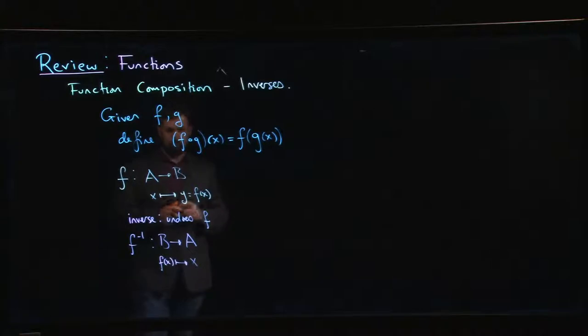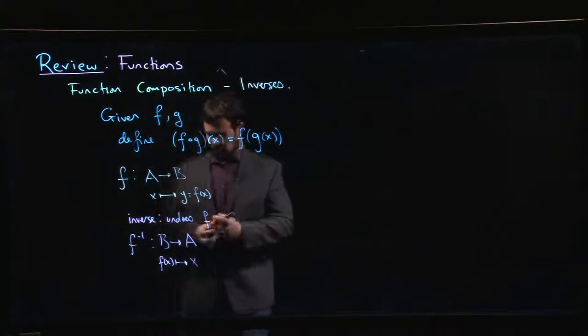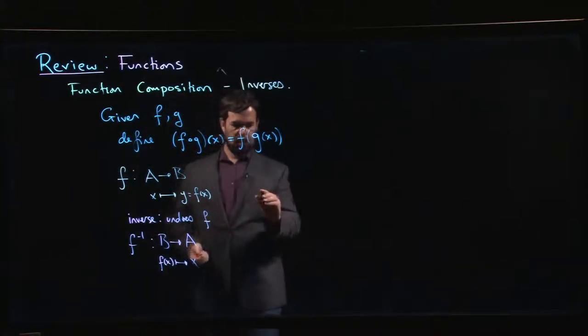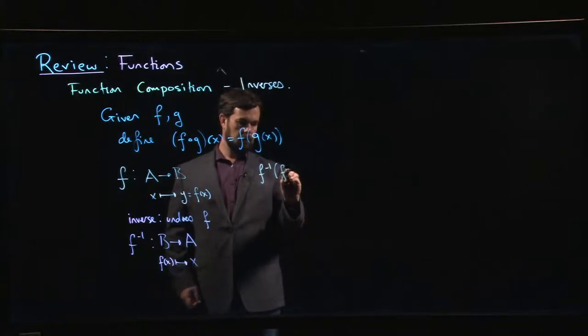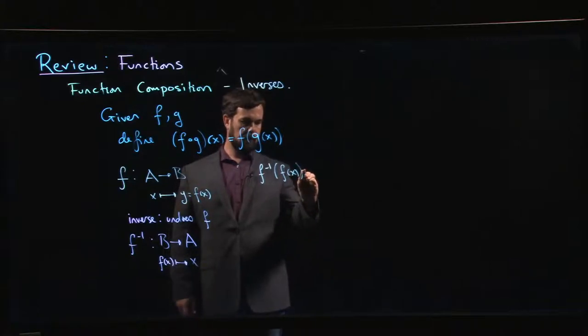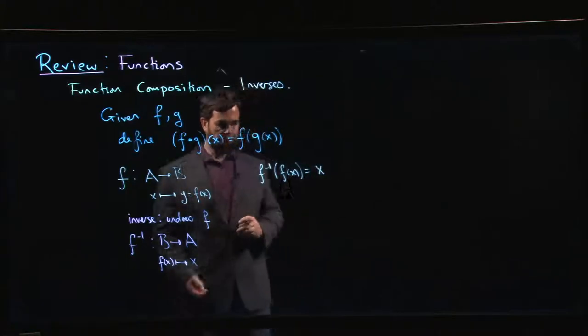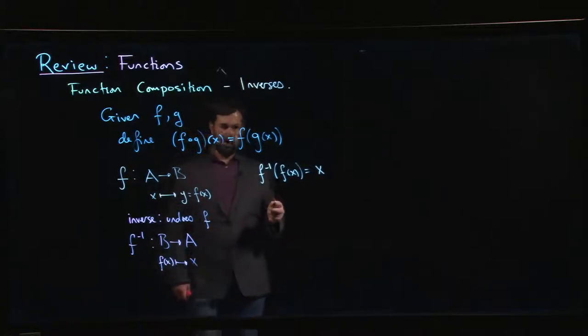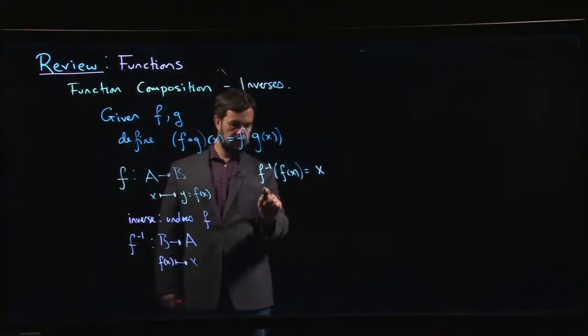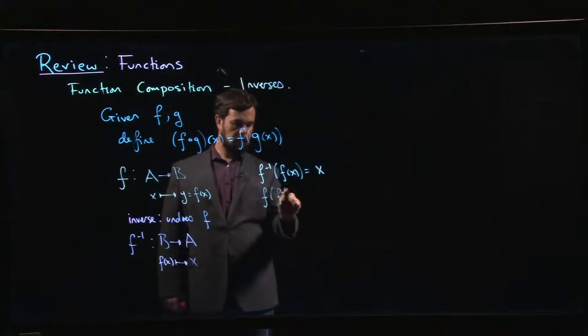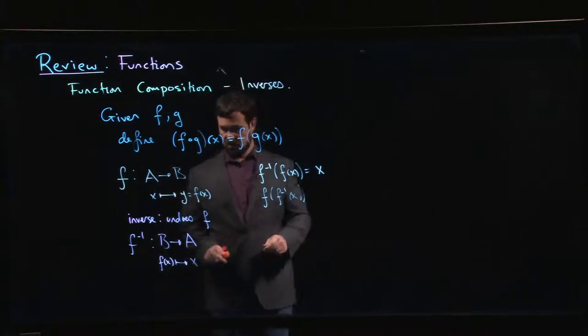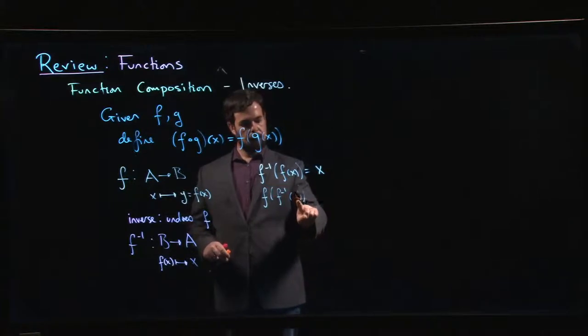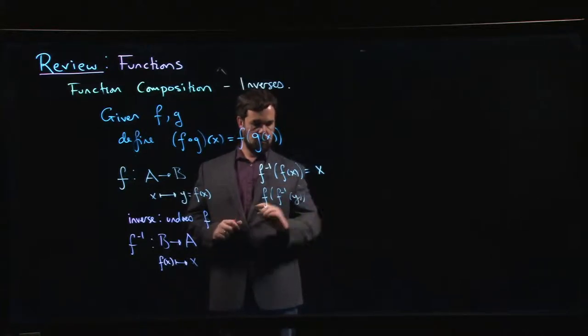Simple enough. So what that amounts to saying is that if I do f inverse of f of x, I should get x. And similarly, if I did f of f inverse of, well, maybe we should call it something else. Maybe we should call it y. All right, y was f of x.